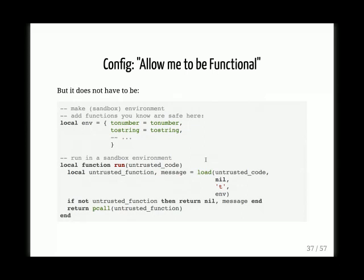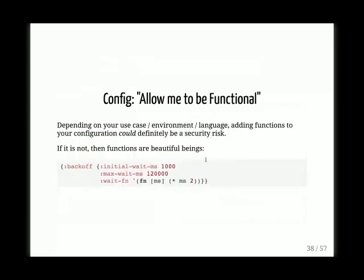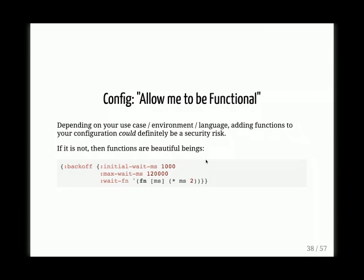You can specify your own environment and your own sandbox and not worry about it. Going back to the backoff example: we have a backoff strategy, and if you look at the function, it makes the backoff exponential — every time you come back, you multiply milliseconds by two, and it grows exponentially until two minutes — 120,000 milliseconds. But you can change that. You can make this backoff constant, or do whatever you want. It gives you a lot of power to work with your configuration.